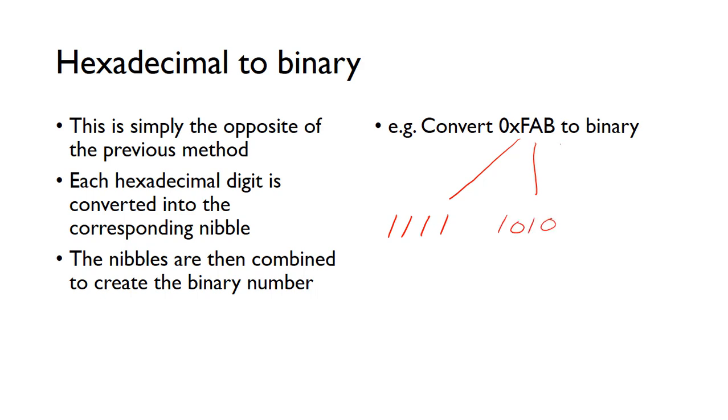And B is obviously 11, so we need an 8, a 2, and then a 1. So it's simply a case of looking at each hexadecimal digit, and just converting that to its binary equivalent.